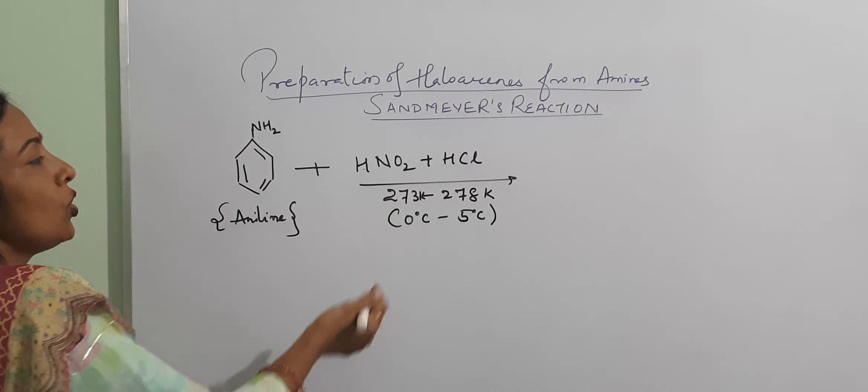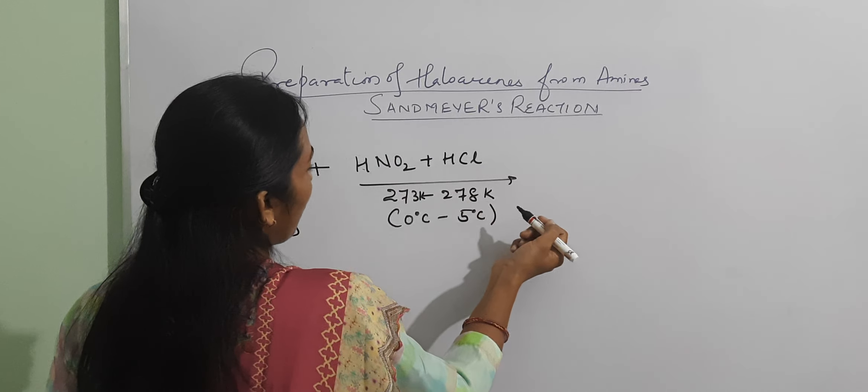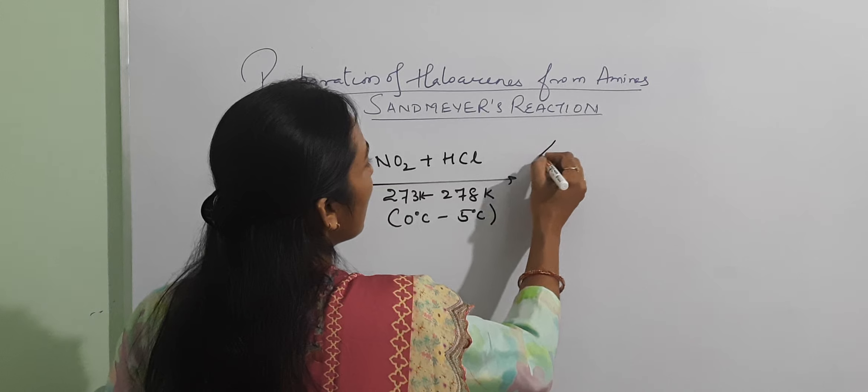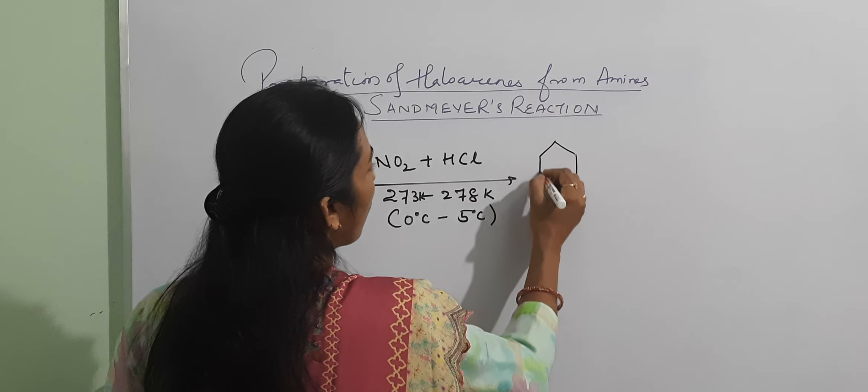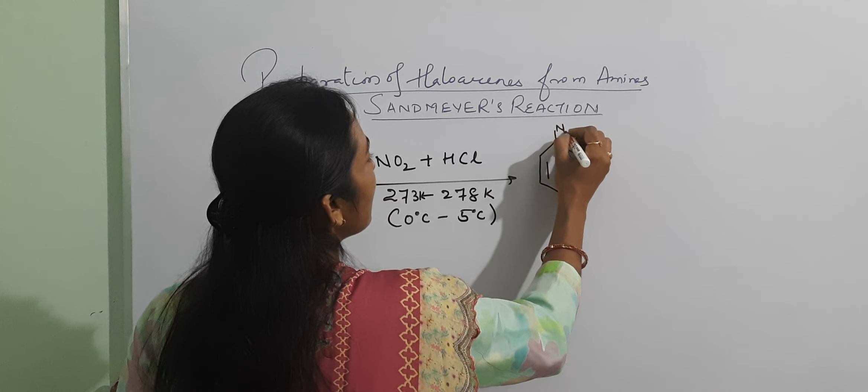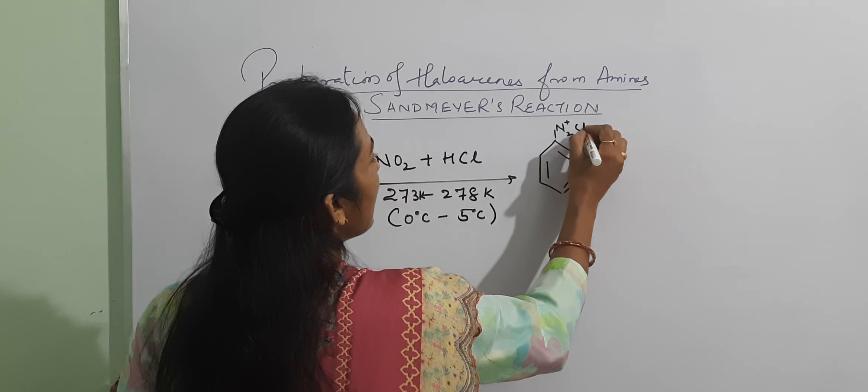Now we have nitrous acid. We are having the diazonium salt, that is N2+ and Cl-.